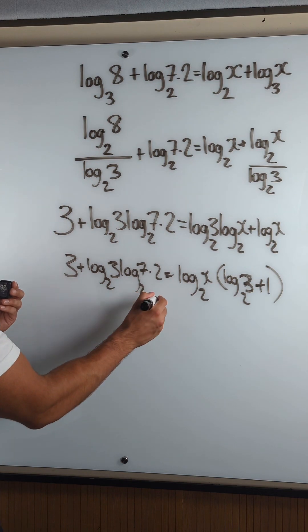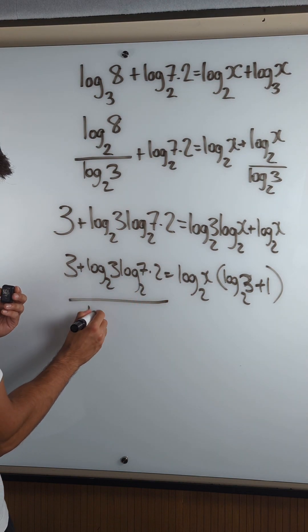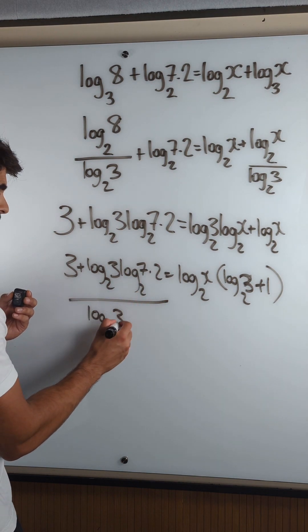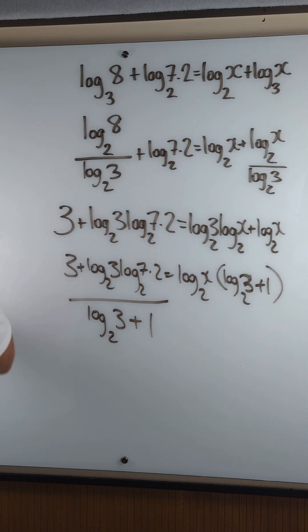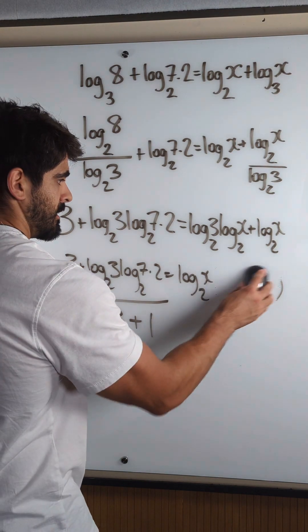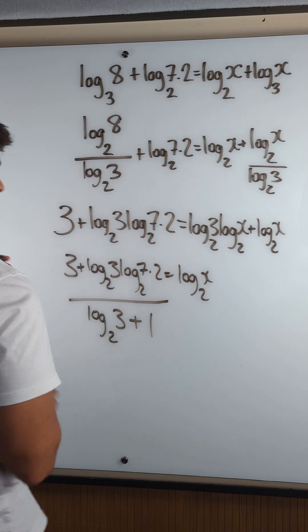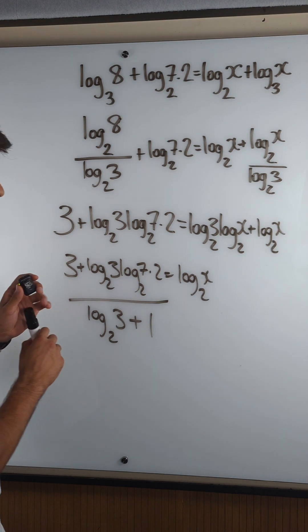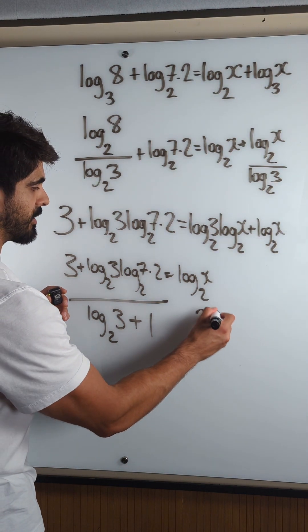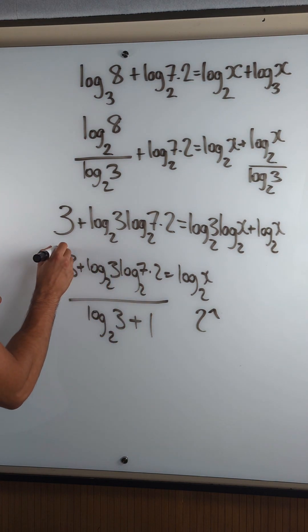Now we're going to divide by that bracket. I'm just going to do it now. Log base 2 of 3 plus 1. Okay. Then we rearrange for x. So that's log base 2. What's the opposite of log base 2? It's 2 to the power of. So you're literally going to do 2 to the power of this whole thing.